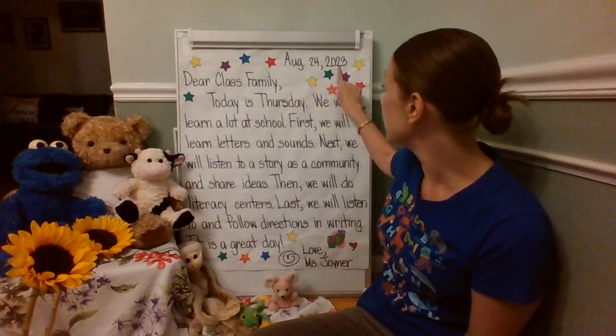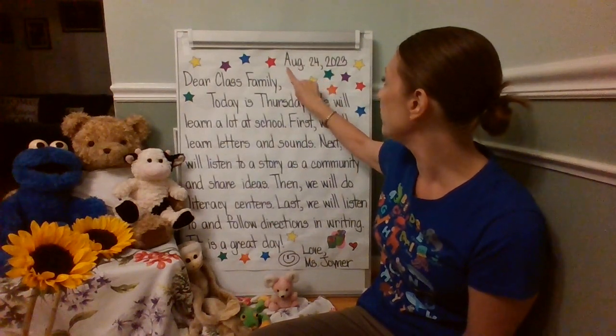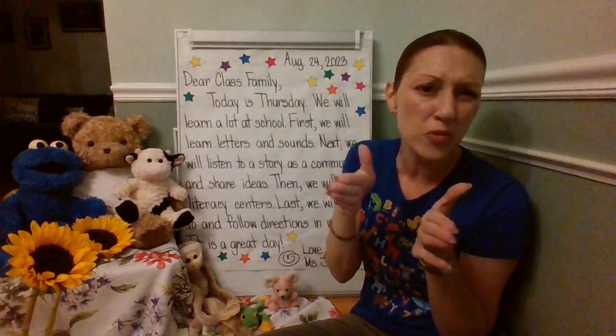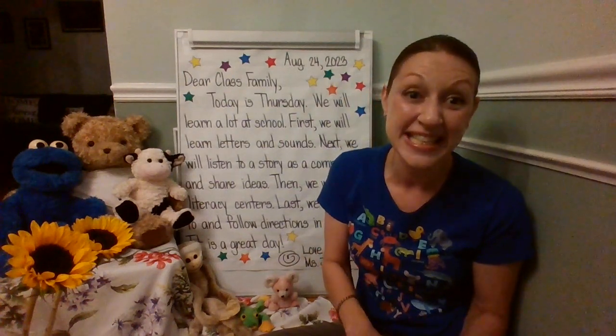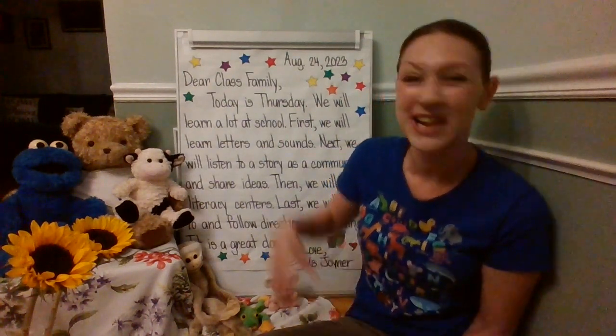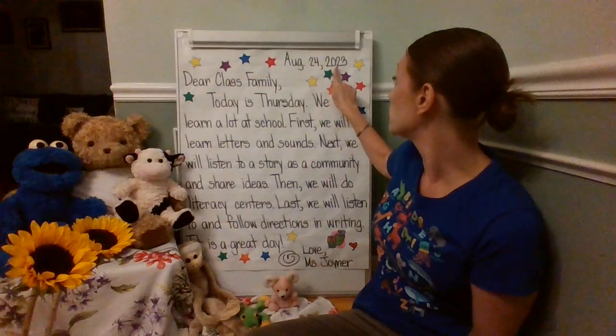Use your finger to point. Let's start with the date here. I see the abbreviation for this month. There's a capital letter A, then U, G, and then a period. What does that abbreviation stand for? You're right — if you said August, go ahead and pat yourself on the back. We are in the month of August. Let's go ahead and reread the entire date: August 24th, 2023.